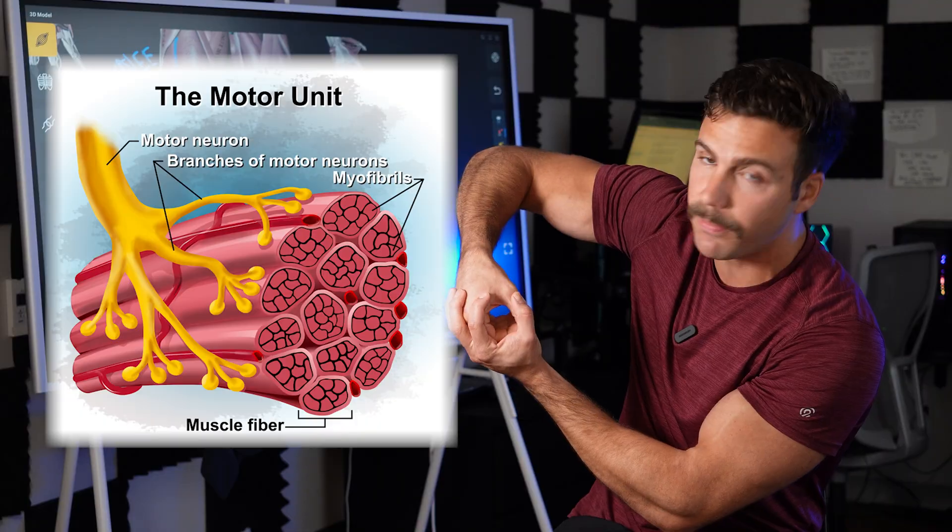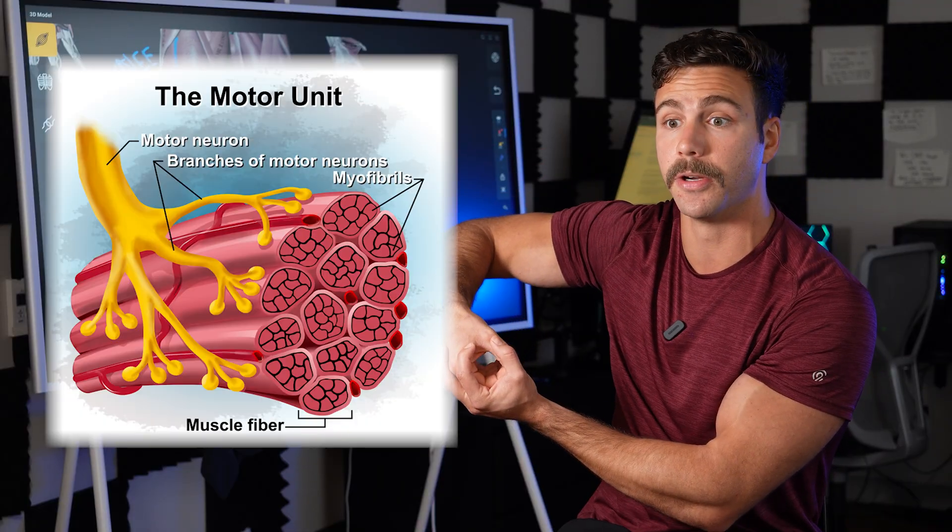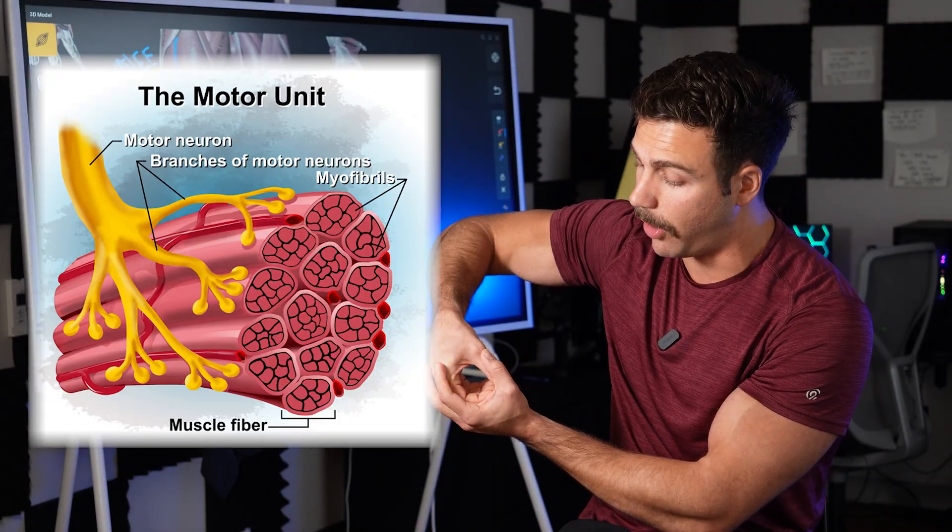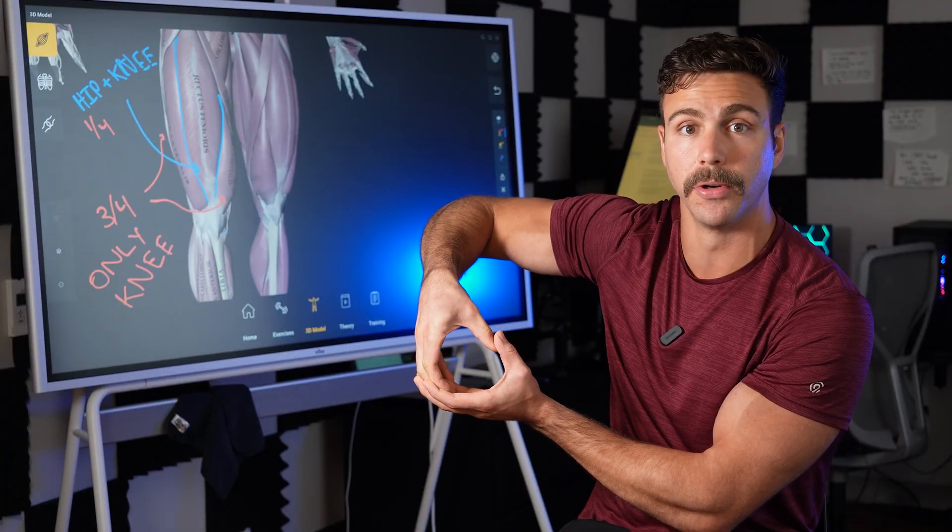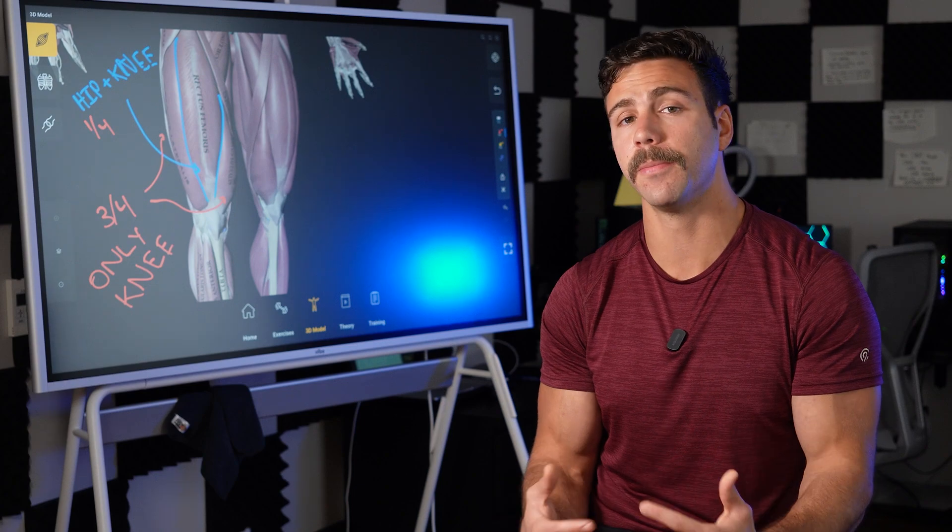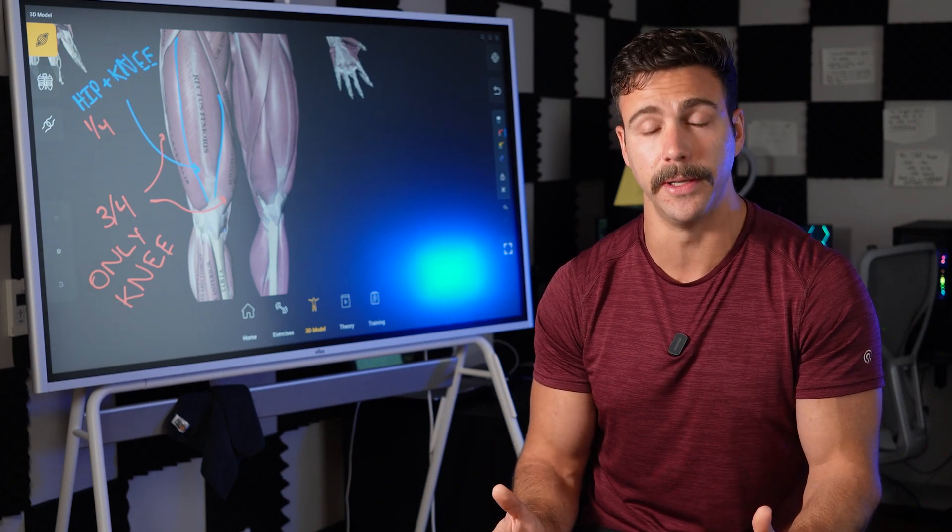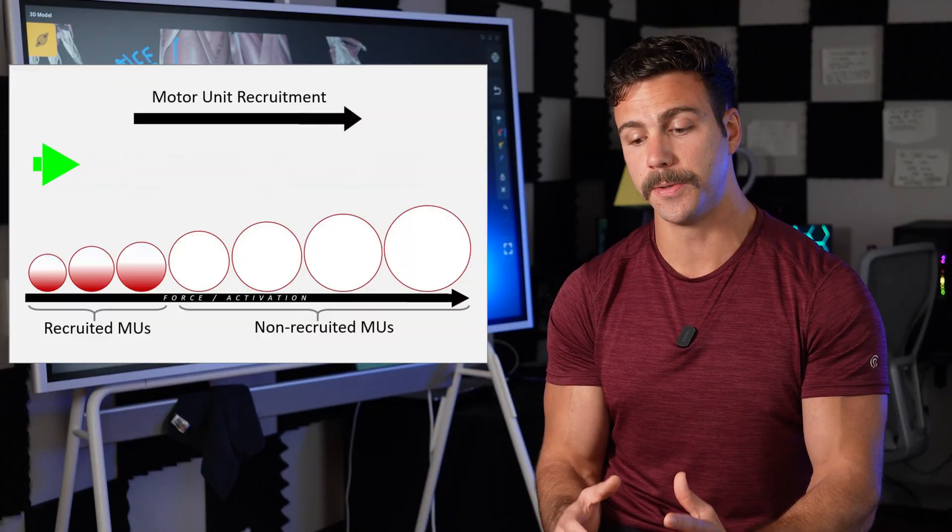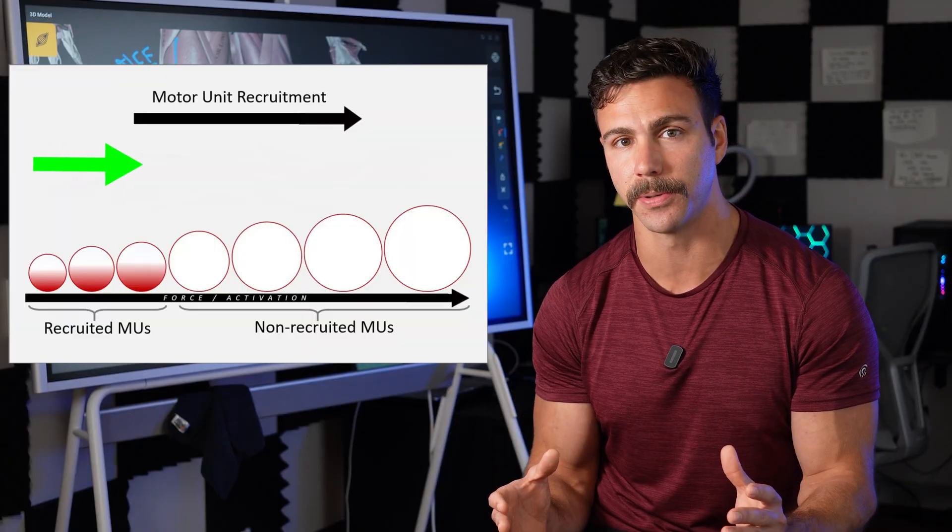Now, some of these bundles are very small, radially, and those are used for day-to-day tasks. But we also have larger motor units that are reserved for more demanding tasks. Now, the way your brain actually recruits these motor units, or turns them on, is according to something called Henneman size principle.